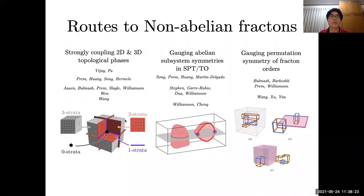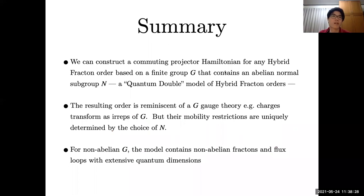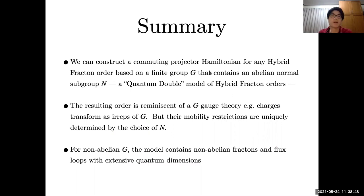There is an open question of whether we can obtain non-abelian fractons for any given group G, and that's what we address in this work. The summary is that we can construct a model with non-abelian fractons for any finite group G that contains an abelian normal subgroup N. This commuting projector Hamiltonian can be thought of as a quantum double model for hybrid fractal orders, containing both mobile and immobile excitations. Importantly, for a non-abelian group G, they contain non-abelian fractons transforming under any finite group G satisfying this condition.